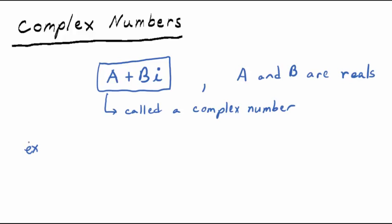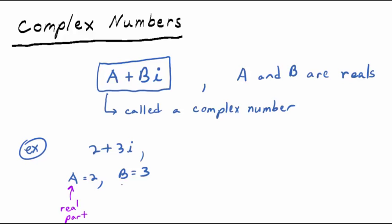Some examples: 2 plus 3i. We think of that as one object, one quantity — a complex number. A equals 2, B equals 3. Many books call A the real part and B the imaginary part, though it differs from book to book. Some books call B times I the imaginary part; some just call the number in front of I the imaginary part.